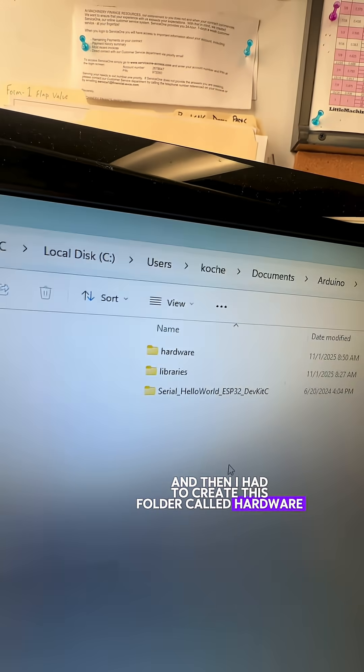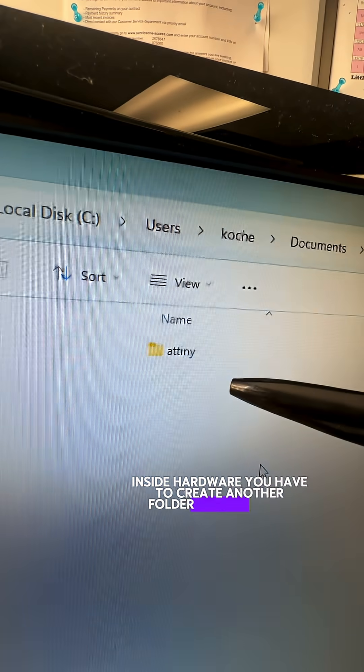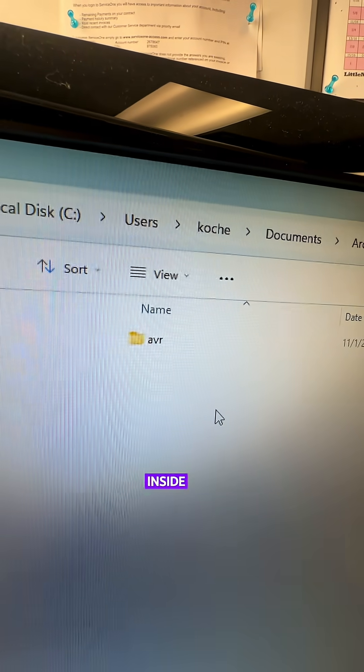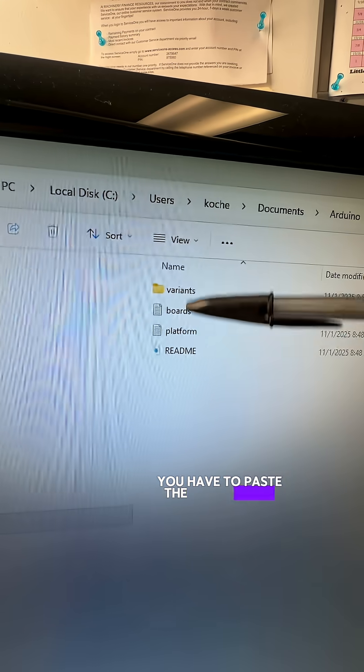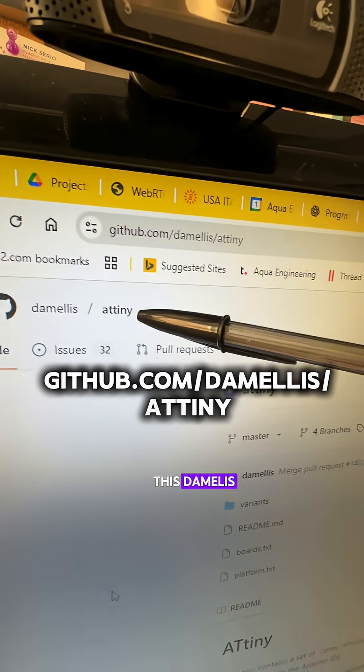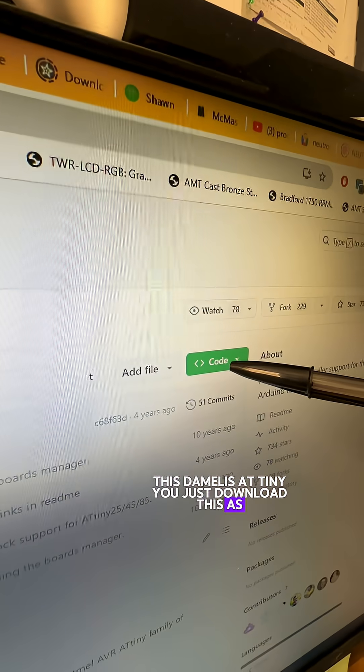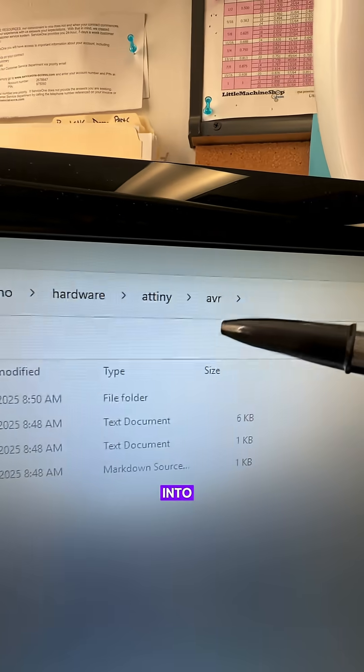And then I had to create this folder called Hardware. Inside Hardware, you have to create another folder called ATtiny. Inside there, you have to create a folder called AVR. In the AVR folder, you have to paste the contents of this GitHub right here, this Damellis ATtiny. You just download this as a zip, unzip it, and make sure that you paste only this stuff into that folder.